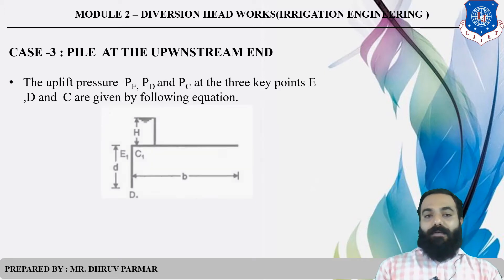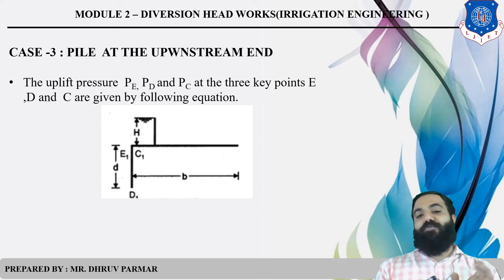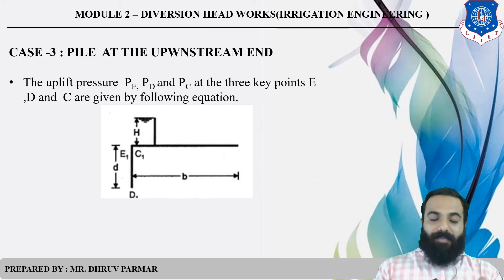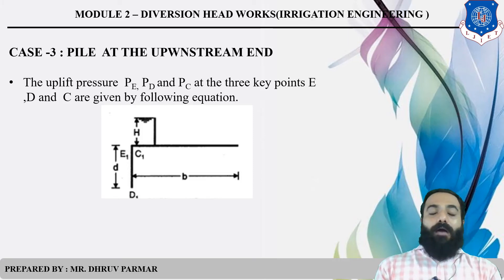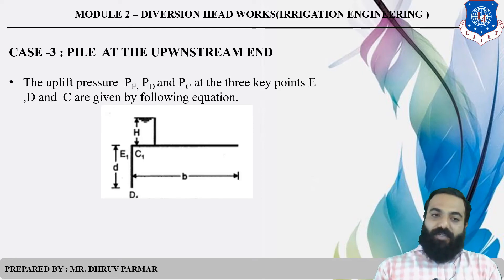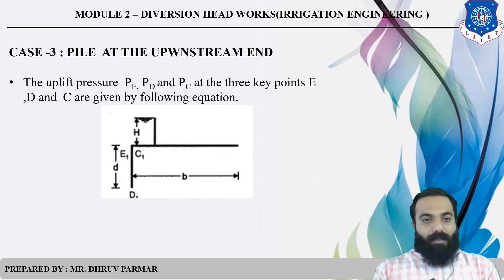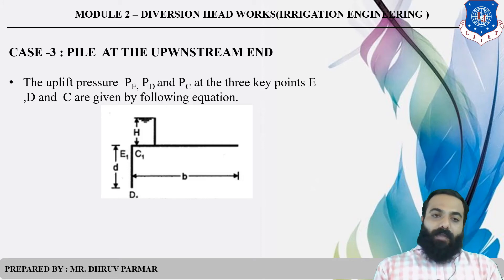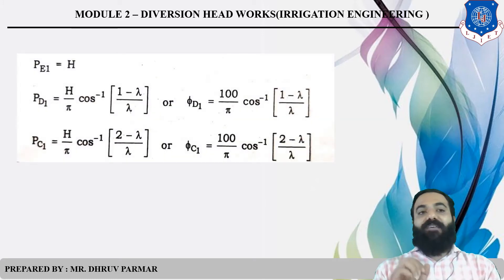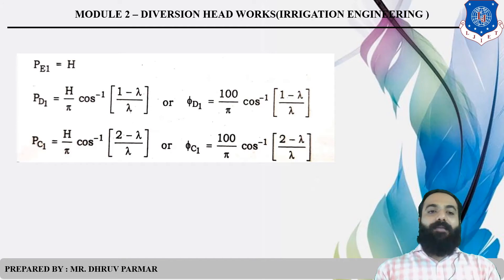For the upstream case, point E is acting on the head side, so PE = H (the full head). Remember this: the uplift pressure at point E equals the head of water. So PE = H, and PD = (H/π) × cos⁻¹[(1 − λ)/λ].